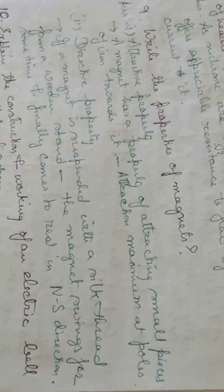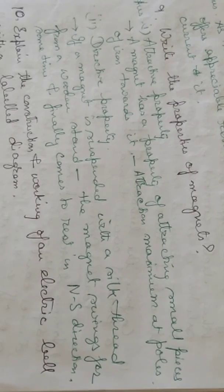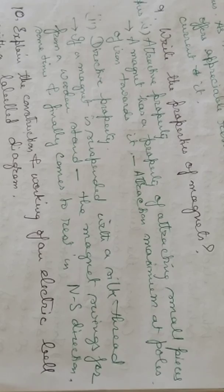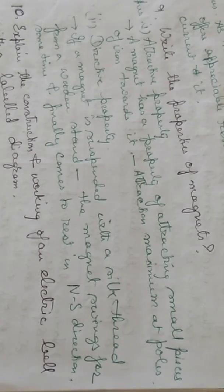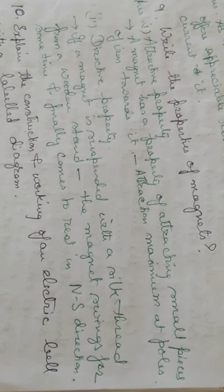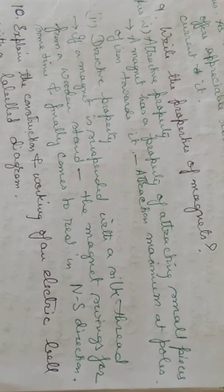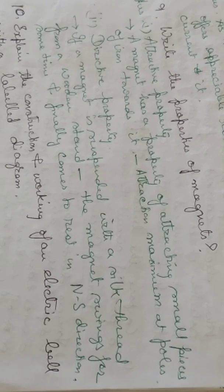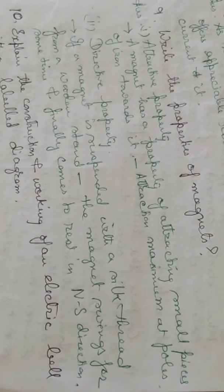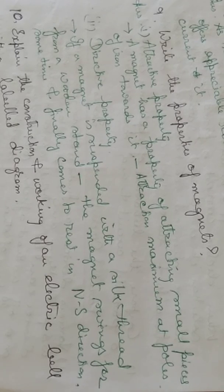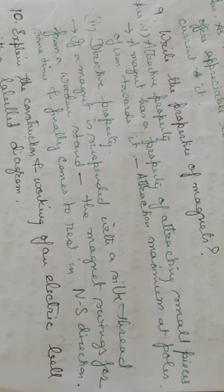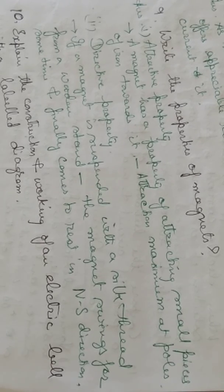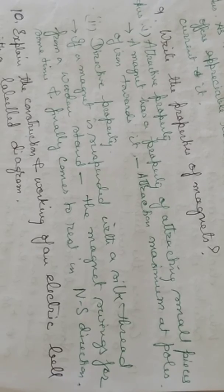Write the properties of magnet. Magnets have two properties: one is attractive and one is directive property. Attractive property of a magnet is that it attracts small pieces of iron towards it. The attraction is maximum towards the poles. At the poles the attraction is maximum and towards the center the attraction reduces. Directive property: if a magnet is suspended in a silk thread from a wooden stand, the magnet swings for some time and then finally comes to rest in a north-south direction.